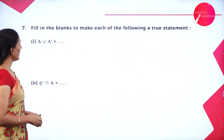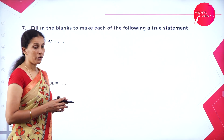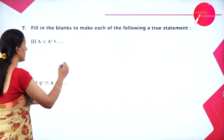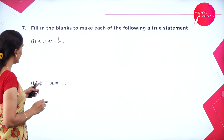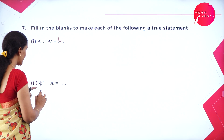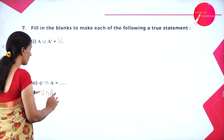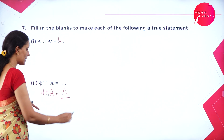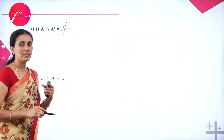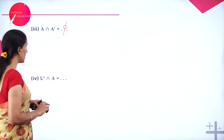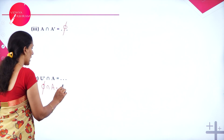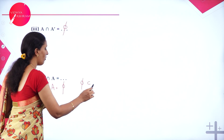Fill in the blanks to make each of the following a true statement. A union A dash equals U — we learned that the union of a set and its complement is the universal set. Phi dash intersection A: the complement of the empty set is the universal set, and U intersection A equals A since A is a subset of U. A intersection A dash equals the empty set, since no element can be in both A and its complement. U dash intersection A: the complement of the universal set is the empty set, and the empty set intersected with any set is the empty set.